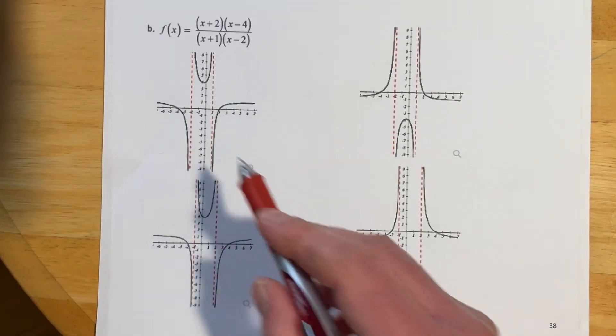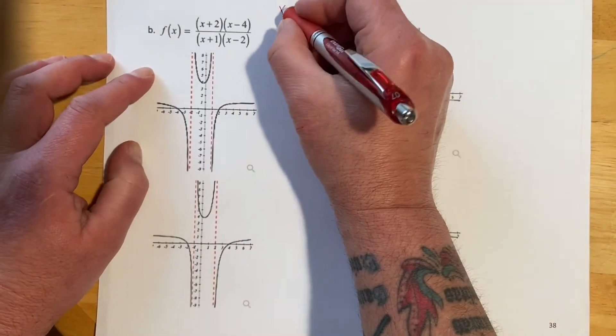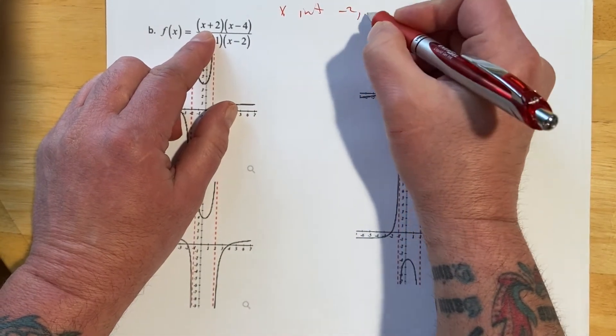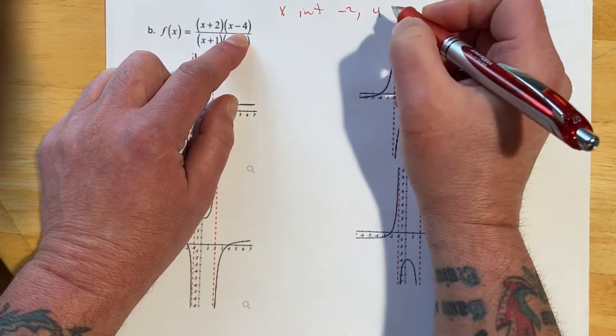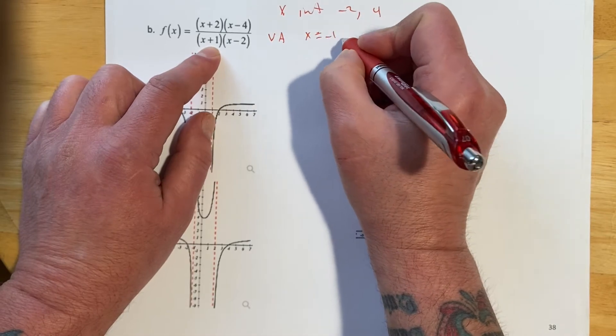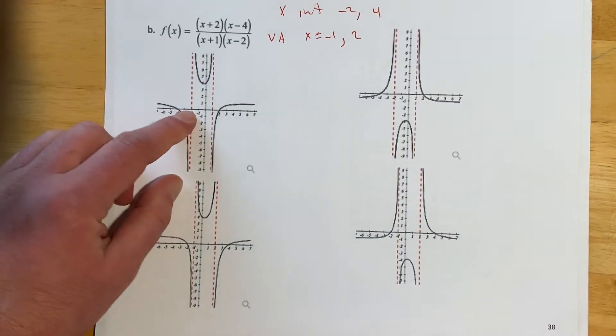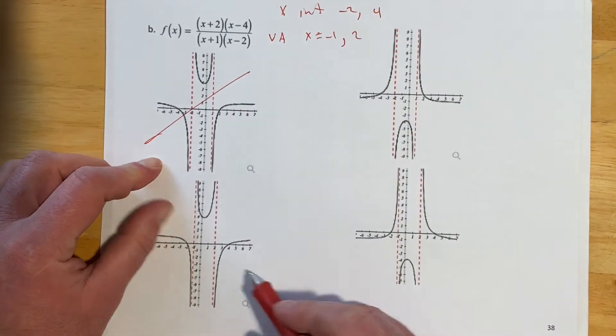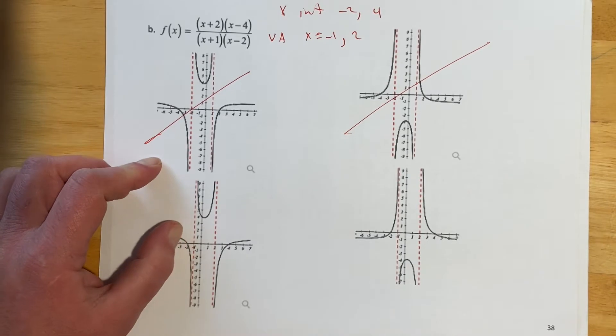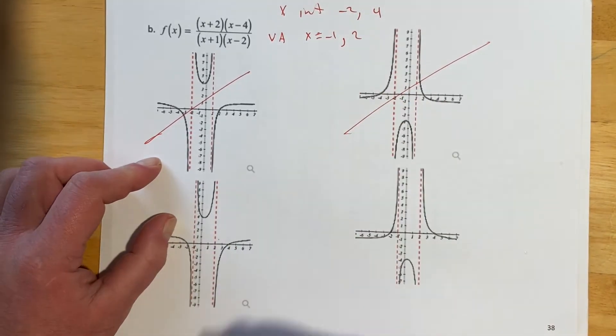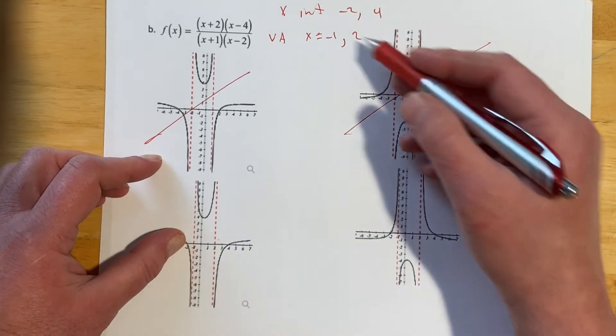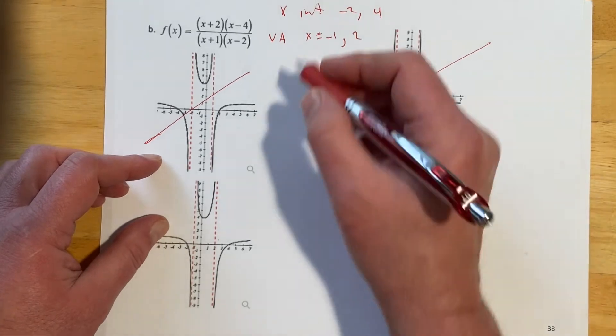Okay, similar question. So this time we're going to have X-intercepts from the numerator, so I should see X-intercepts at negative 2 and positive 4. And I should have vertical asymptotes at X equals negative 1 and 2. So let's start there. So that's not it. That could be it. Negative 1, that's not it. That could be it. So the 2 is going to fit on both of those. And the X-intercepts are 2 and negative 2, 4, negative 2, 4, so I've got to do the Y-intercept.